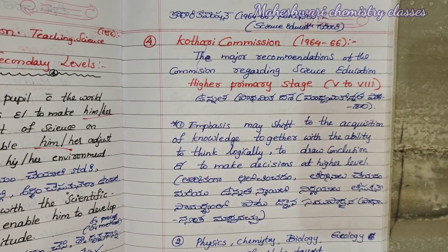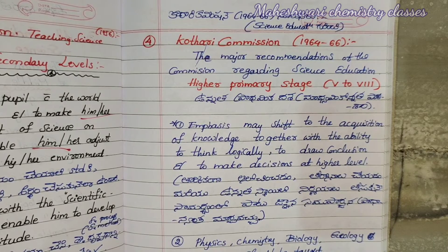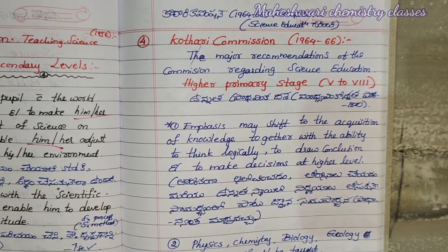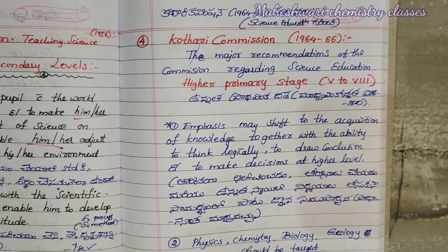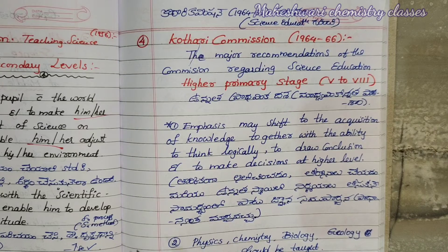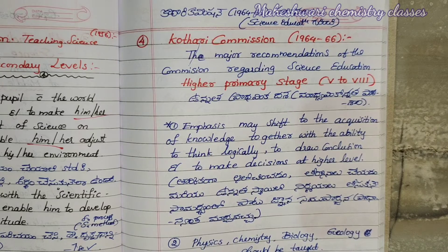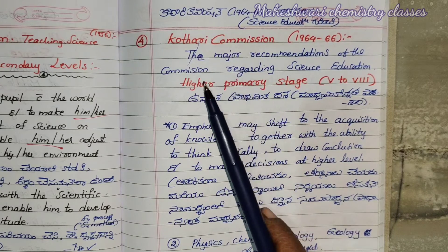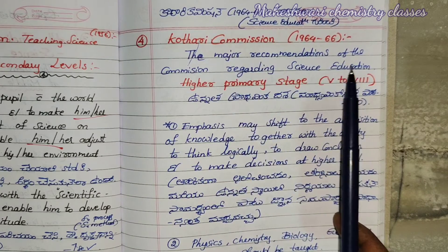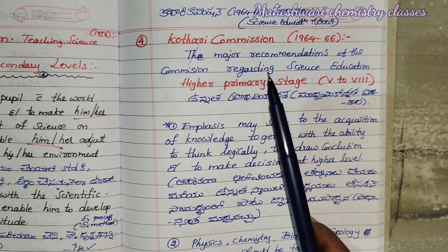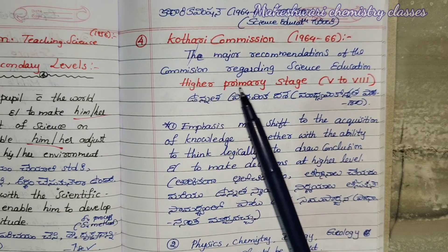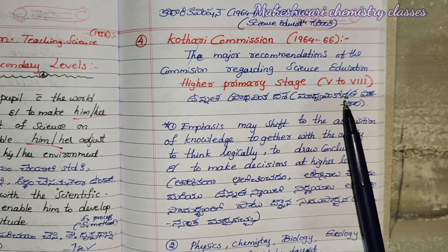The third part is C. Kothari Commission. It is very important — 1964 to 1966. The Kothari Commission is very important for science education. The major recommendations of the commission regarding science education. First one: we have studied the higher primary stage.